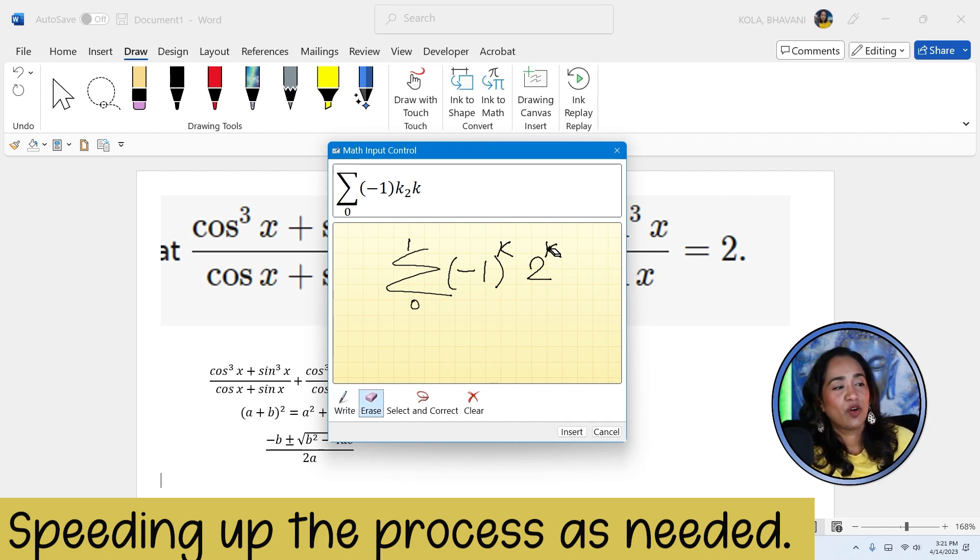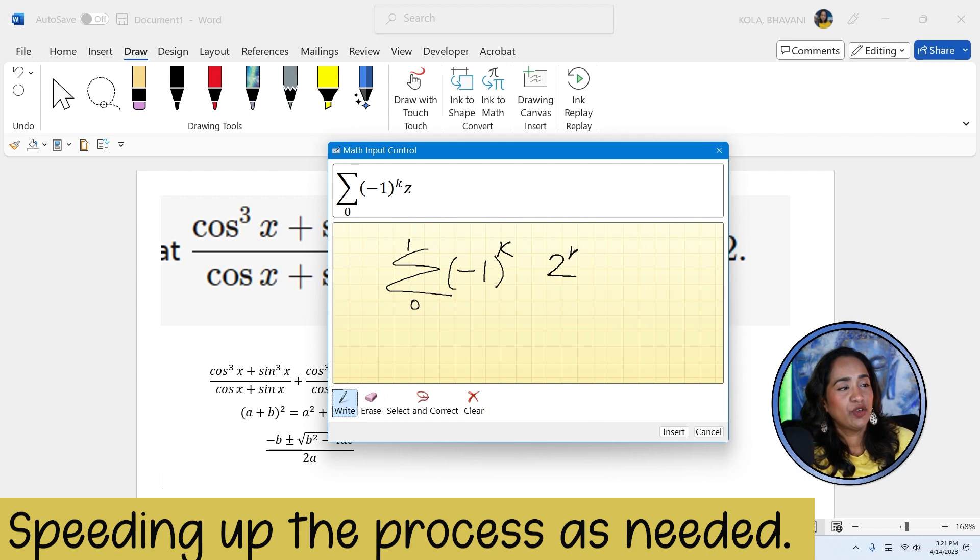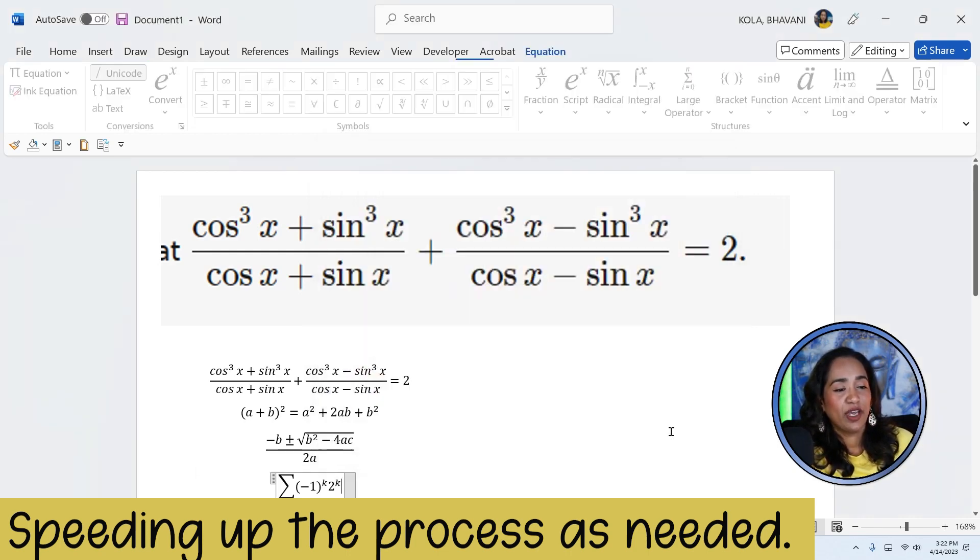And that's not how you intended it to be. All you have to do is go back, erase it, and then give it some space and two to the power k. And if that's not a 2, depending on how your handwriting is, go ahead, select, and then say, Hey, that's not z. That's two to the power k. And it automatically does it for you. And you click insert.